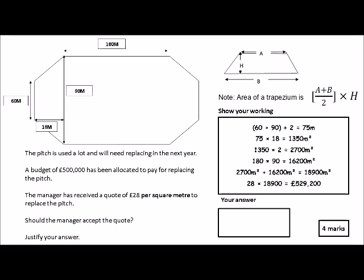Now the question is asking you, should the manager accept the quote? Now he's got a budget of £500,000, so the answer would be no. He shouldn't accept the quote because the cost would be over budget, and that's your final point. No, this is over budget.